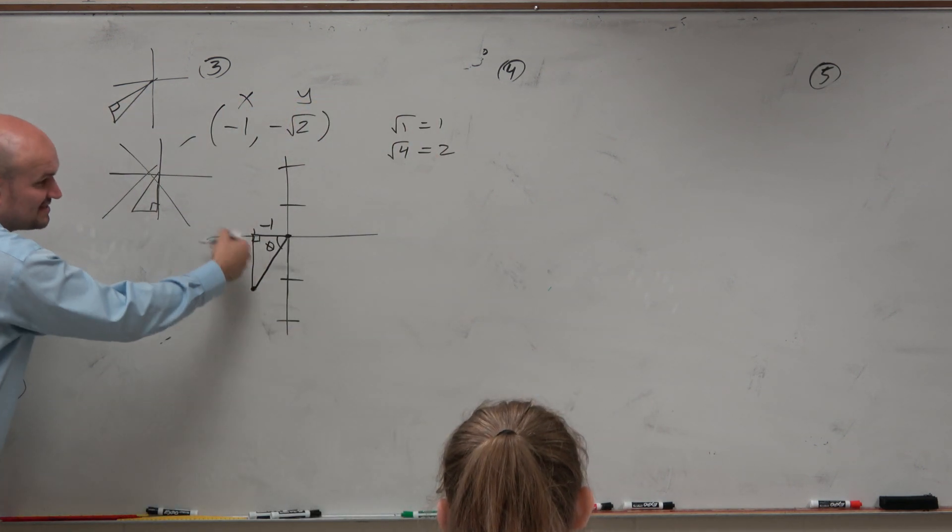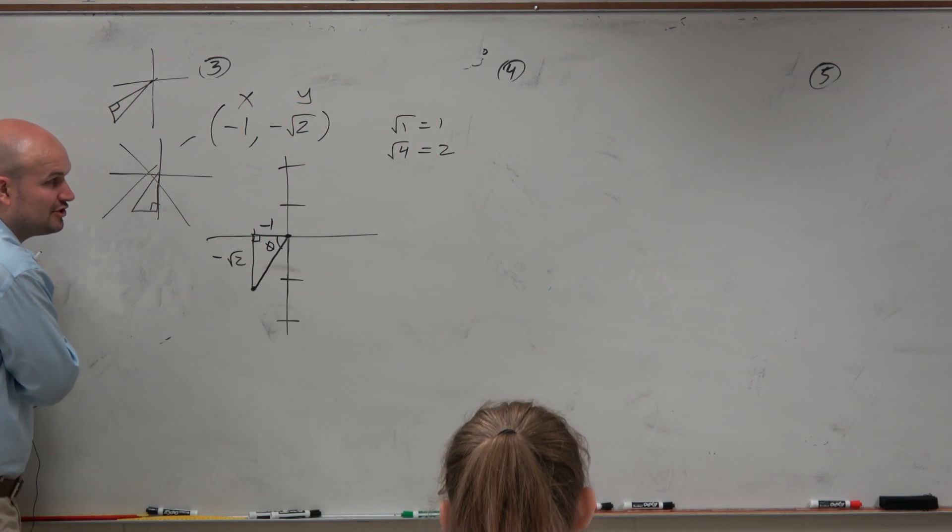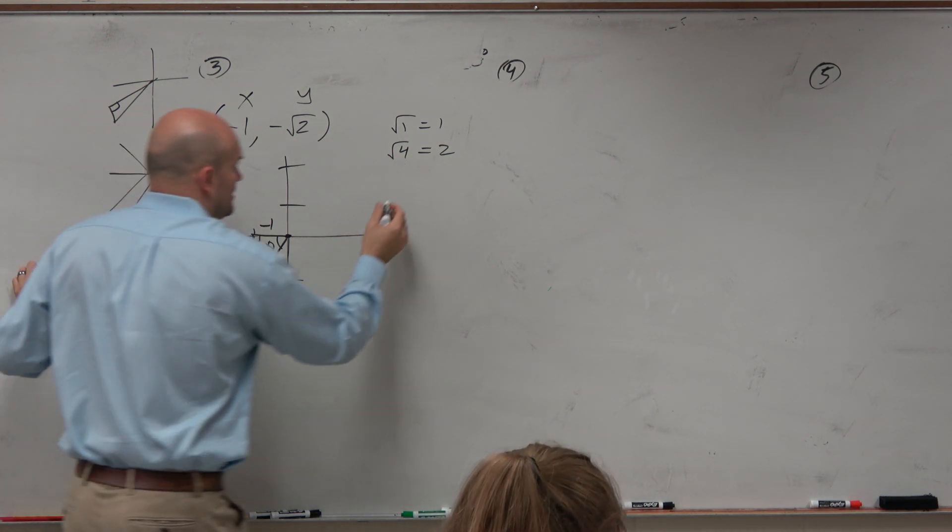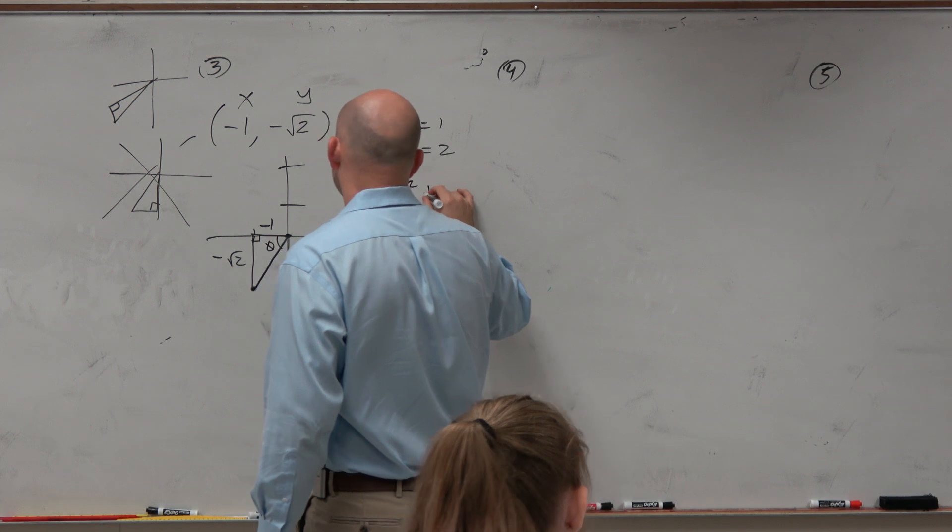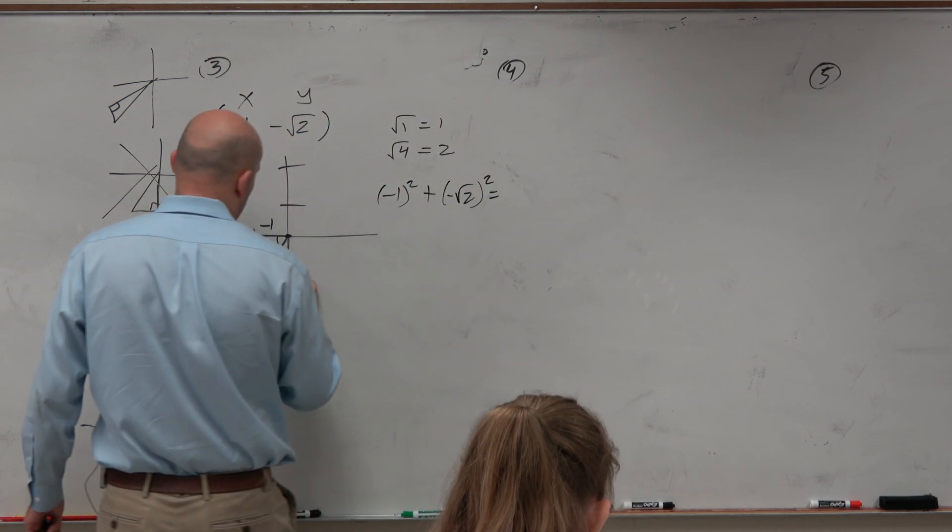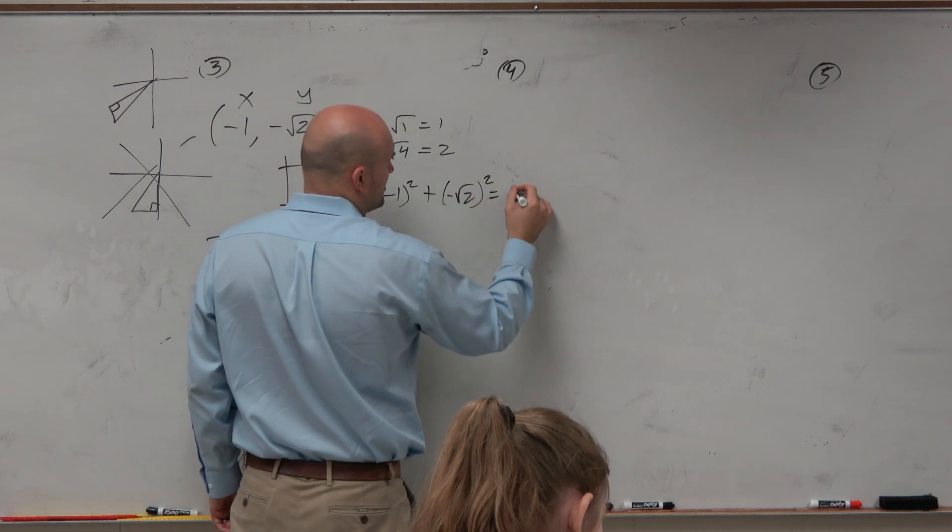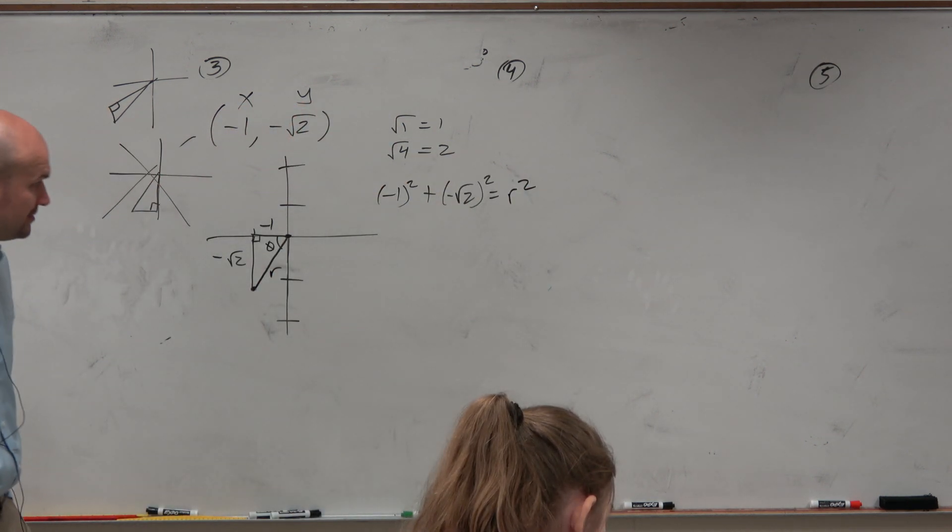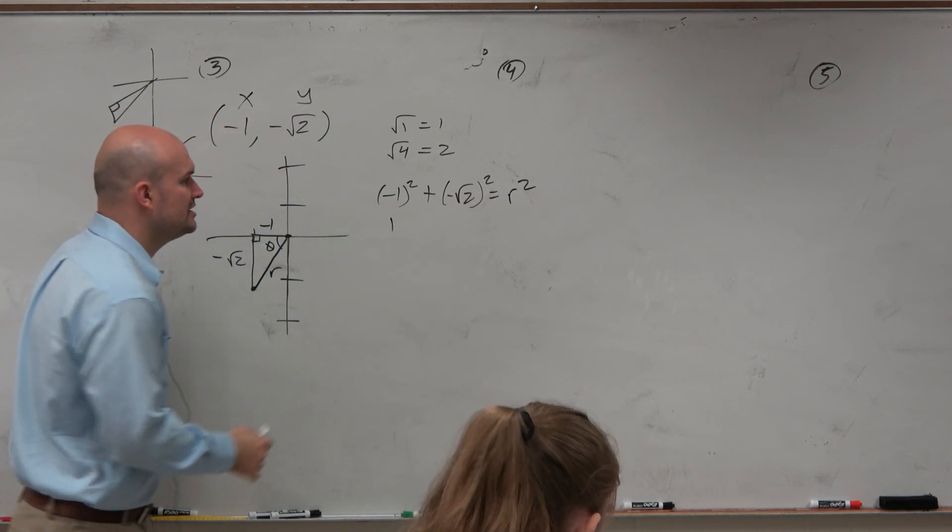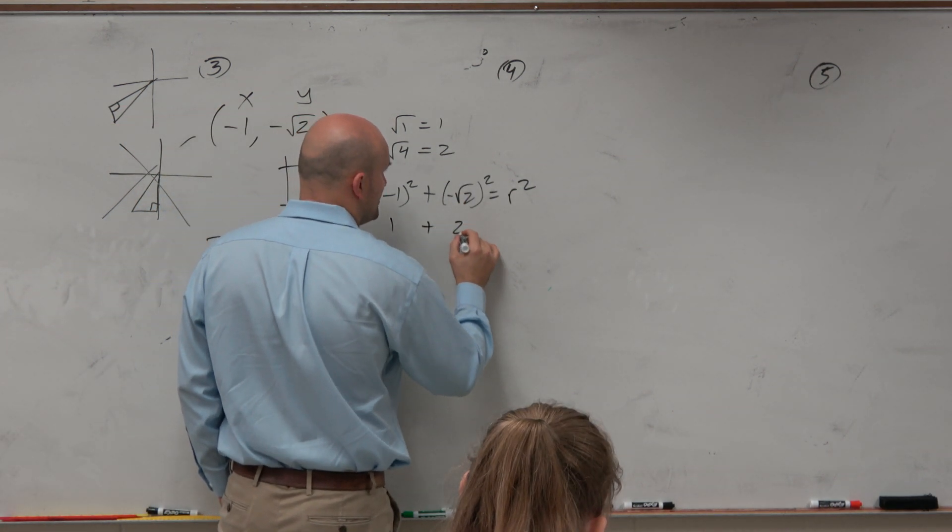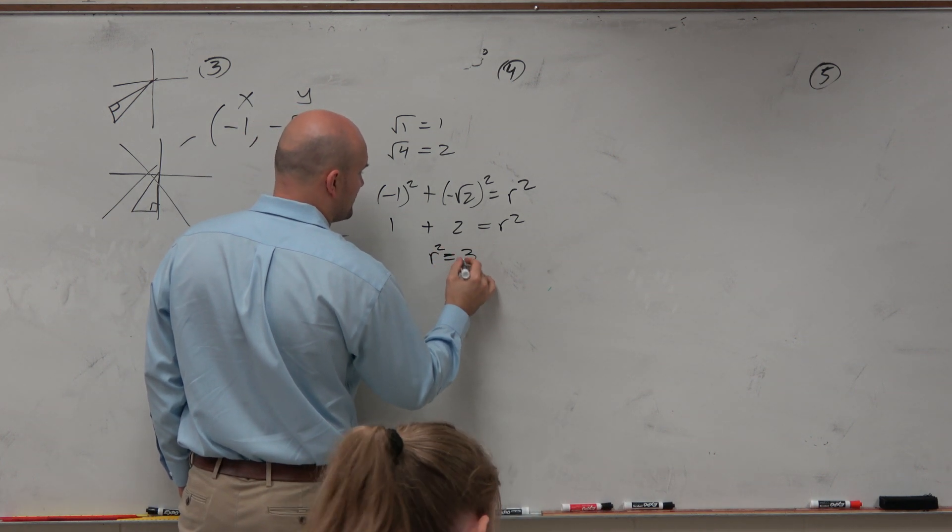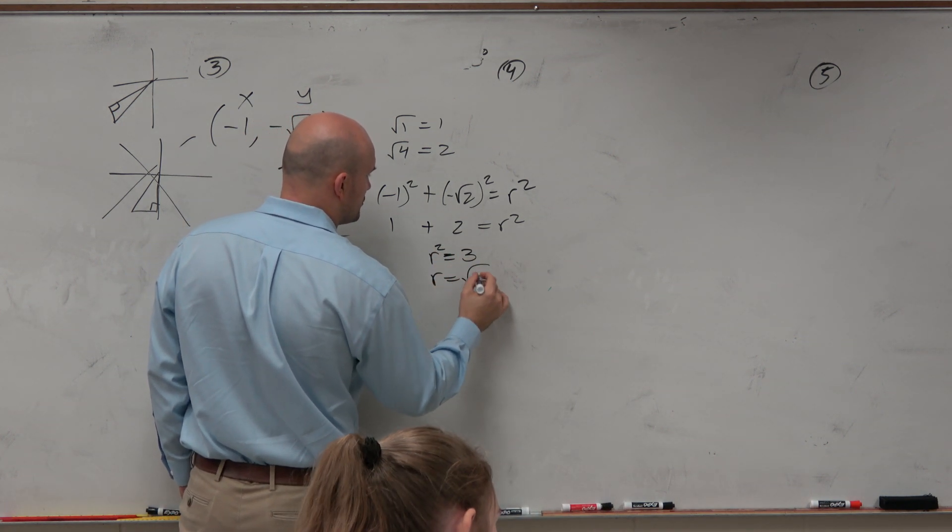So now we have the side lengths. To evaluate the six trigonometric functions, we're going to need to find the hypotenuse. So we'll just do negative 1 squared plus negative square root of 2 squared equals, and we'll call this r squared to formalize our definition. So negative 1 squared is 1. Negative square root of 2 squared is going to be 2 equals r squared. r squared is equal to 3. r is equal to the square root of 3.